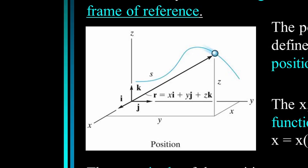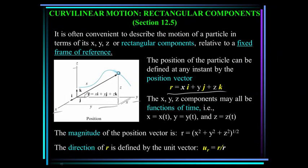Rectangular components are relative to some fixed frame of reference x, y, z. The position of a particle can be defined by vector r, broken into its rectangular components: x in the i direction, y in the j direction, and z in the k direction. These x, y, and z components may all be functions of time. The magnitude of the position vector is the square root of the sum of the squares, and the direction of r is defined by the unit vector r divided by its magnitude.